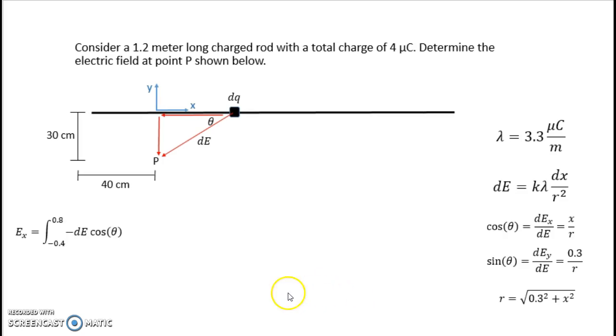So I'm going to start setting up my integrals now. dEx I have figured out is dE times cosine theta. I stick in a minus sign because if you look at this charge element here, the x component is pointing in the negative x direction. If I forgot that, I could always assign the direction at the end of the problem because I know what direction my electric field should point in overall. I've also put in integral limits here. I want to integrate over the entire length of my rod. So based on where my origin is, my rod starts at negative 0.4 meters and ends at 0.8 meters. So those are my integration limits.